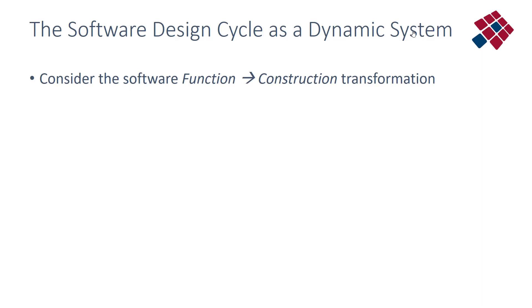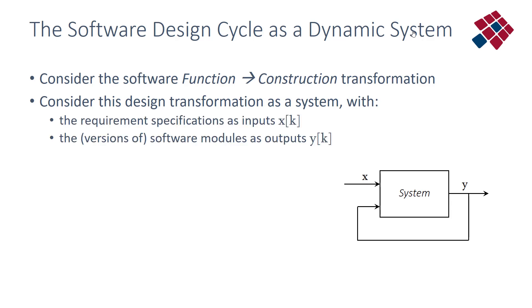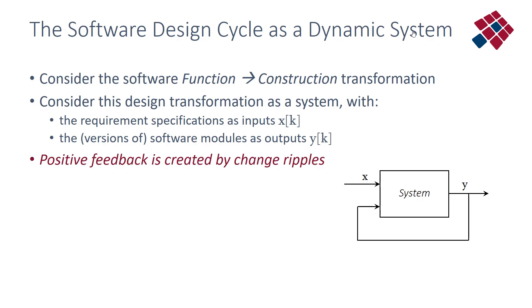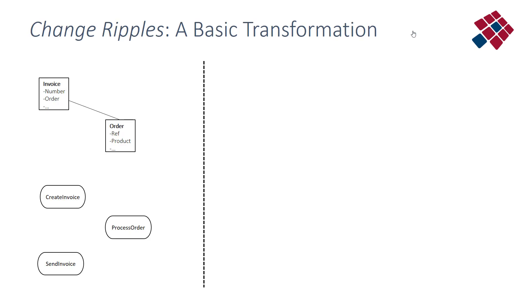The same applies to the software design cycle. Consider the software transformation from functional requirements to constructional primitives — artifacts or modules. The requirement specifications are the inputs x at a certain point in time, and the total amount of versions of software modules are the outputs y. The positive feedback mechanism, which can lead to dynamic instabilities, is created by ripples caused by changes. In traditional evolving information systems, changes are applied on a regular basis — giving a discrete time variable k — and they do cause ripple effects.